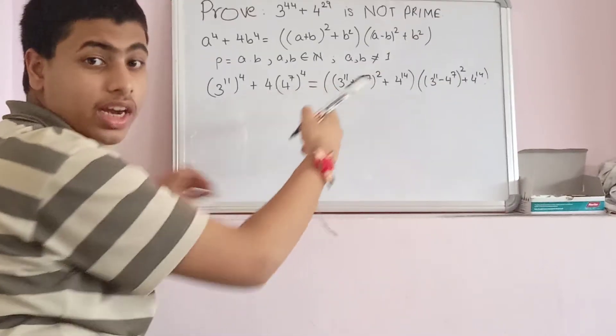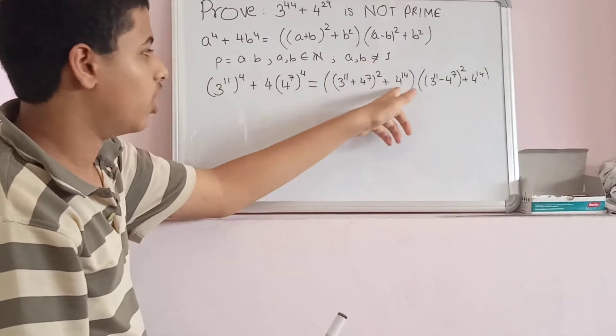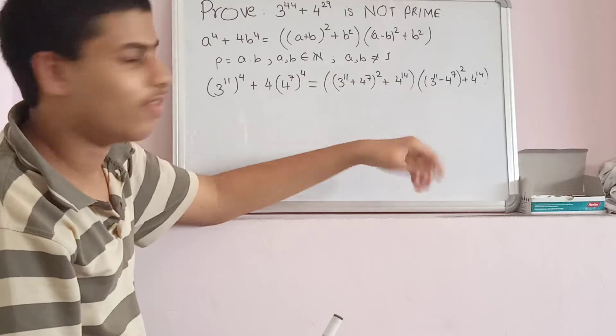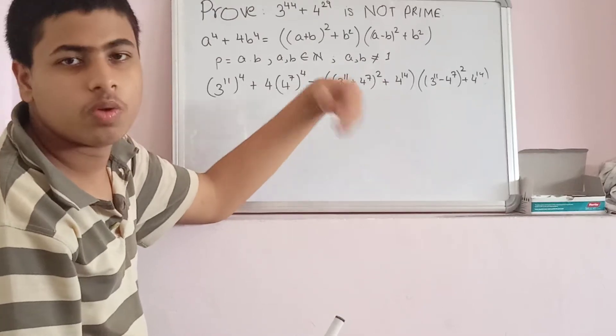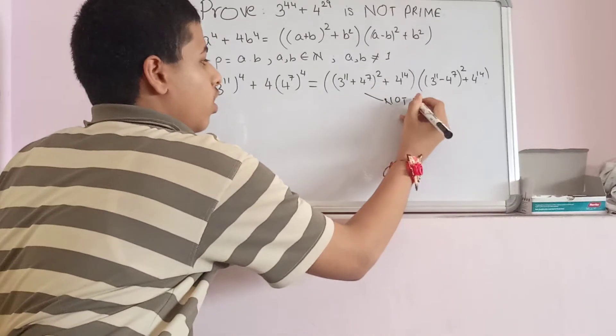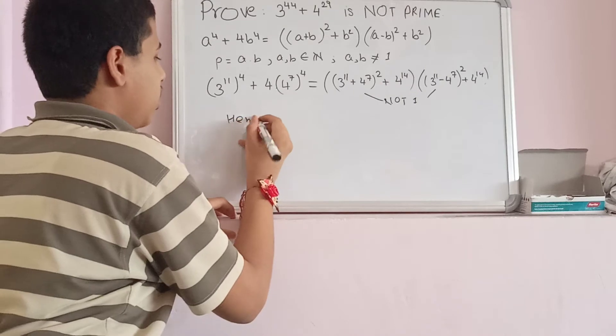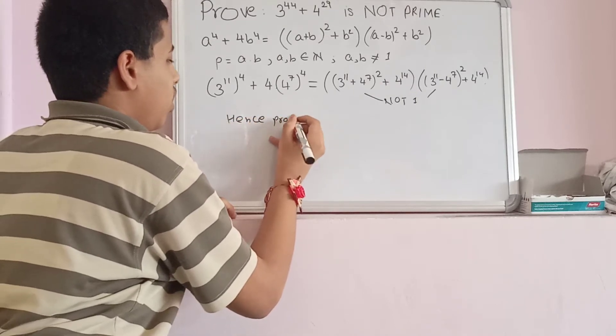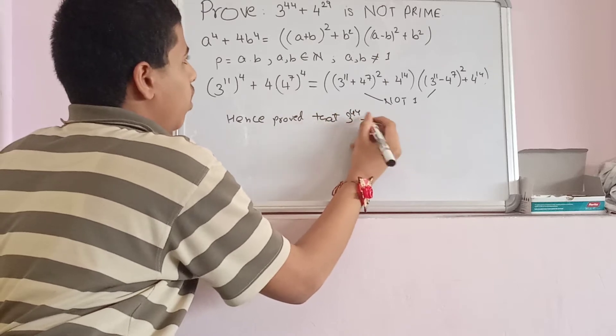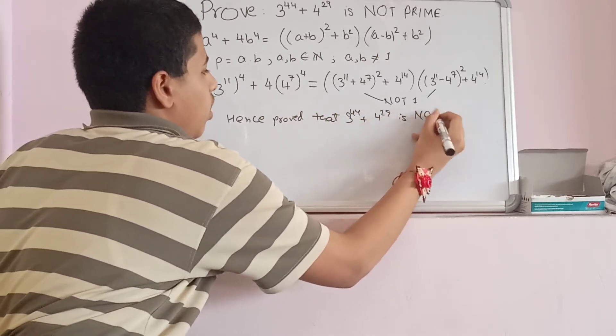Clearly, I can write them as a product of 2 numbers and both of them are greater than 1 because we are adding something squared which is always greater than 1 to something that is huge. So both of them are not 1, hence proved that 3^44 + 4^28 is not a prime.